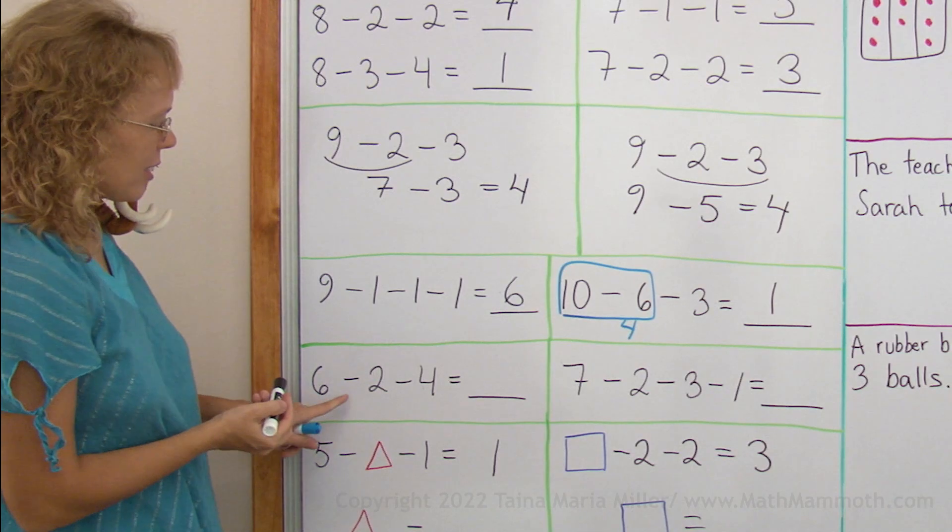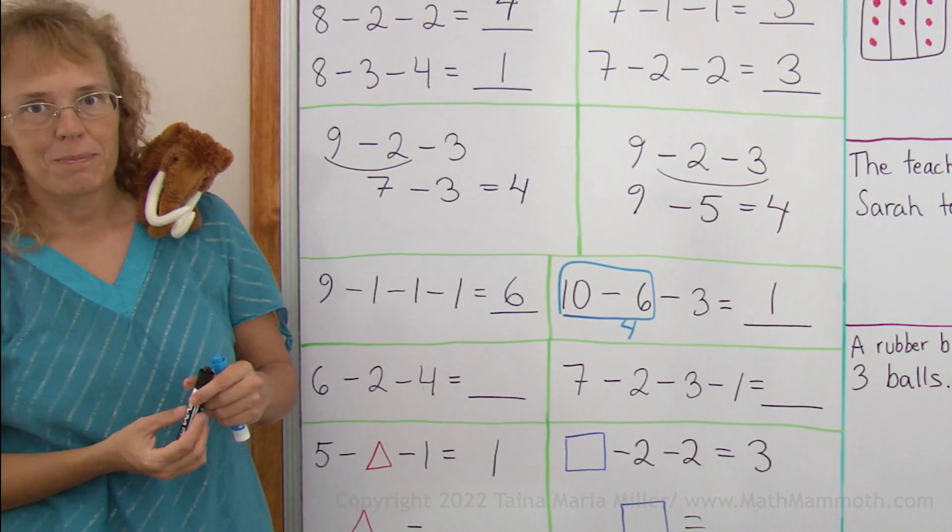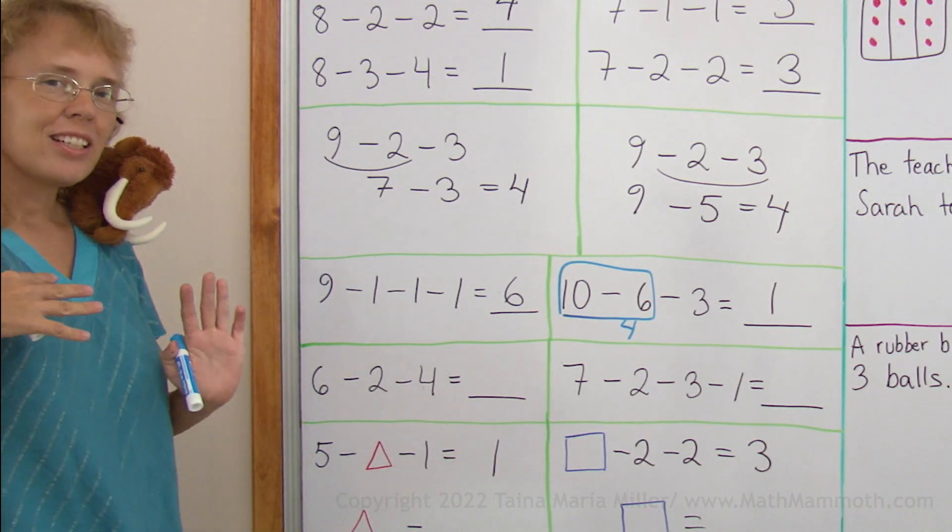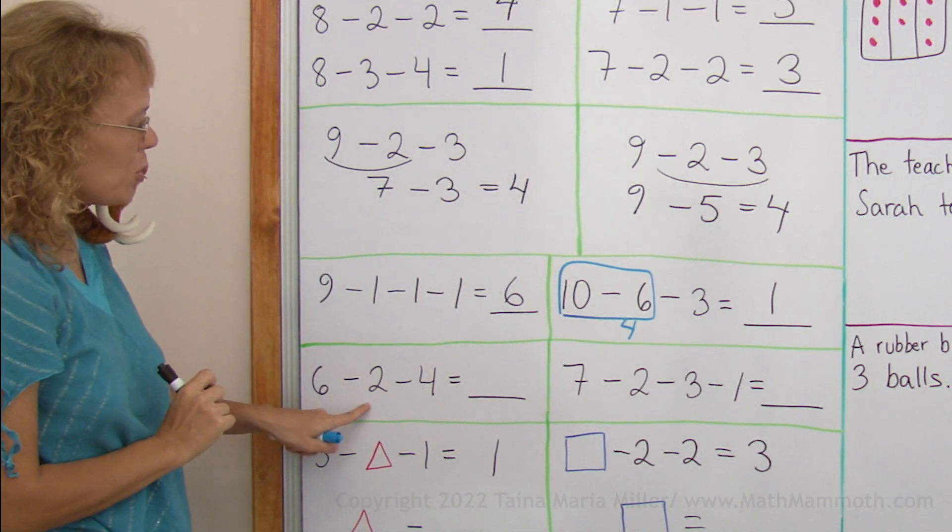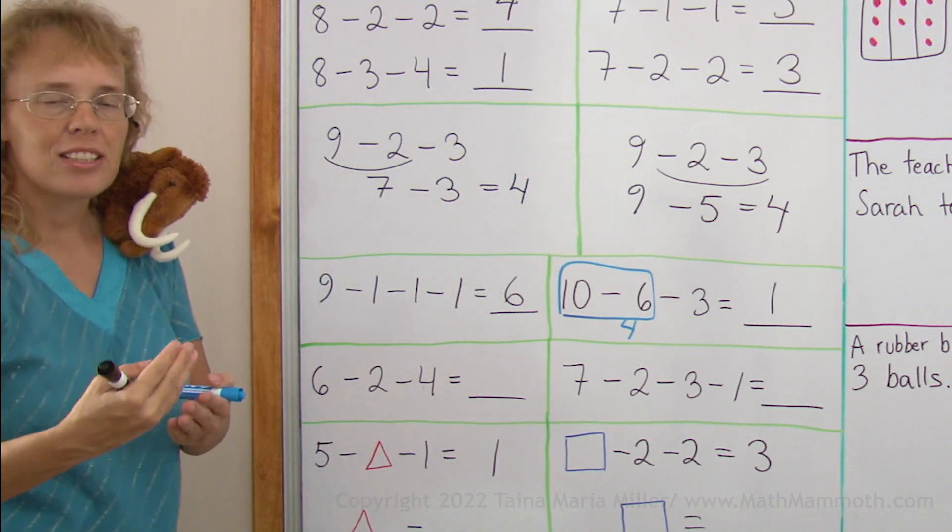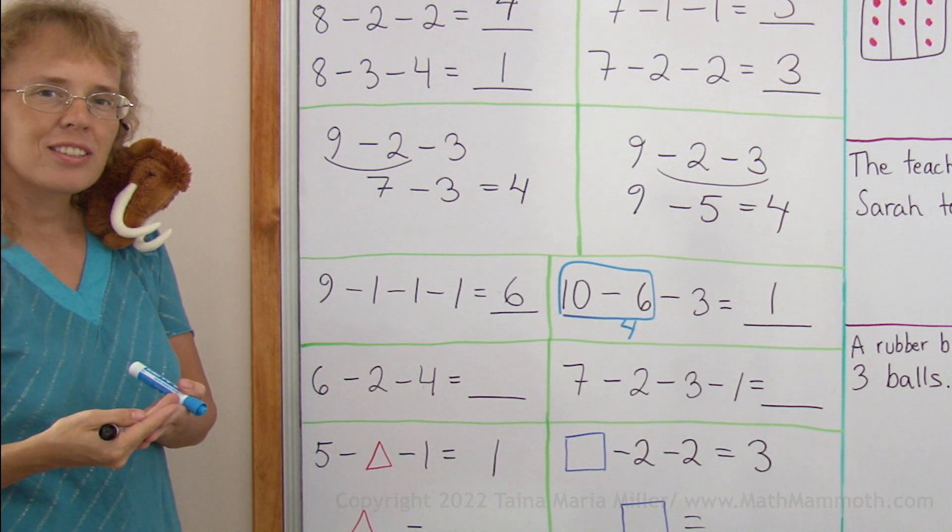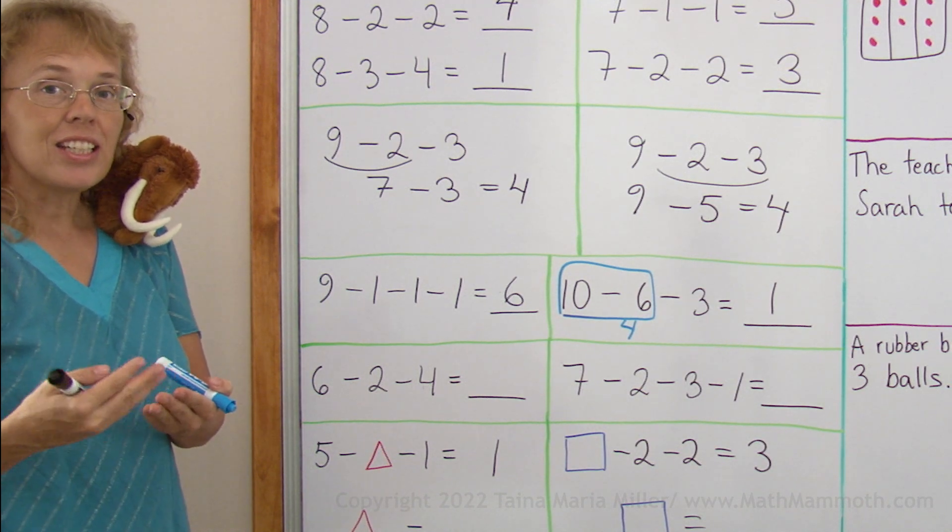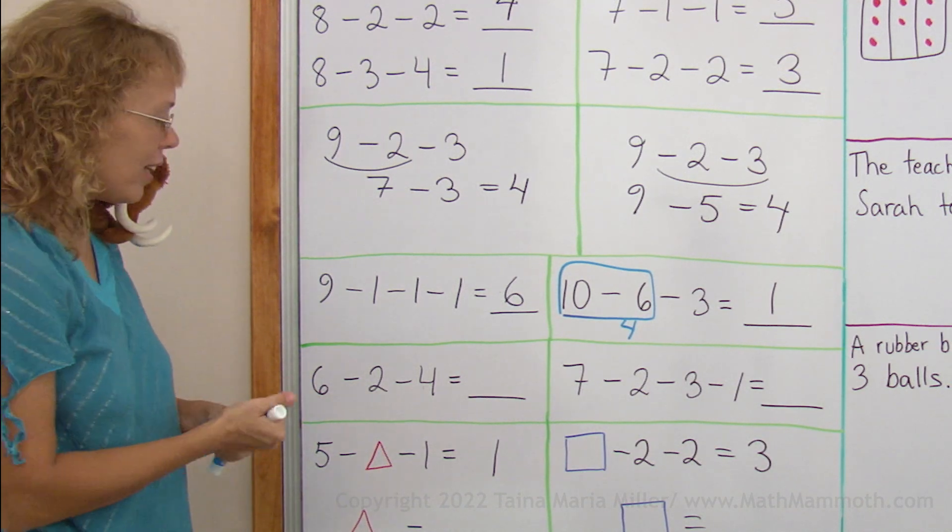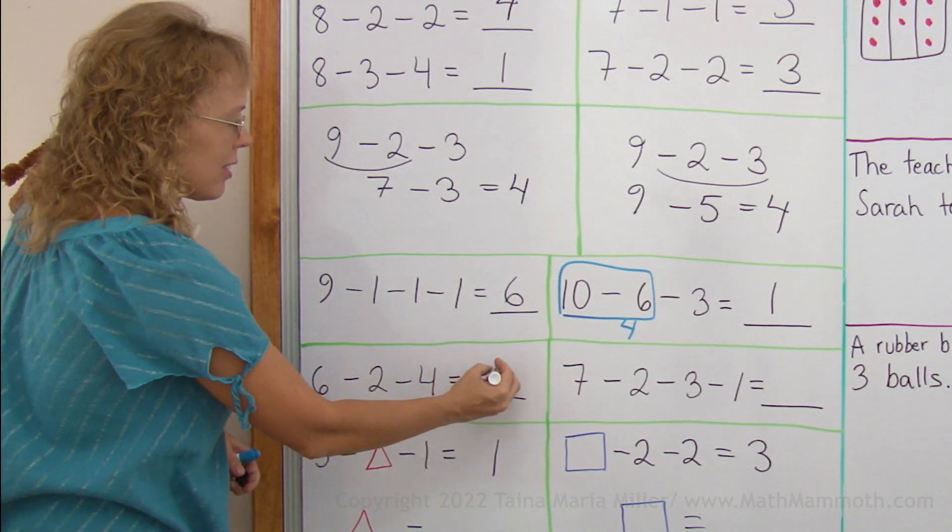Over here, 6 minus 2 minus 4. Let's try this way. 2 and 4 are gonna get subtracted, go away. So 2 plus 4, we add, that's 6. A total of 6 will go away. 6 minus 6, 0.